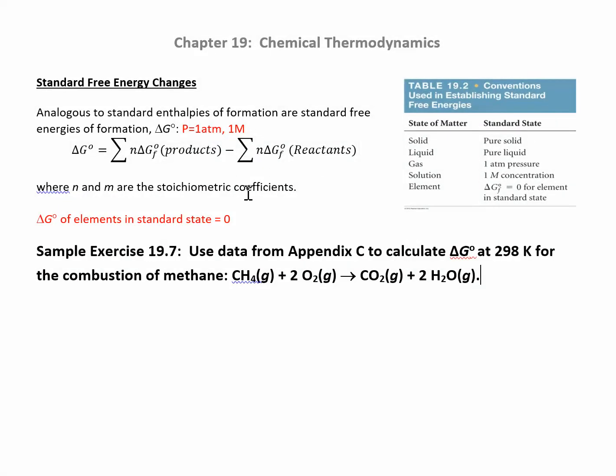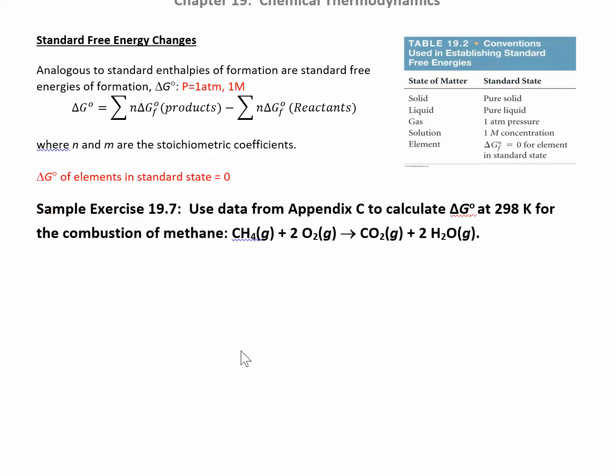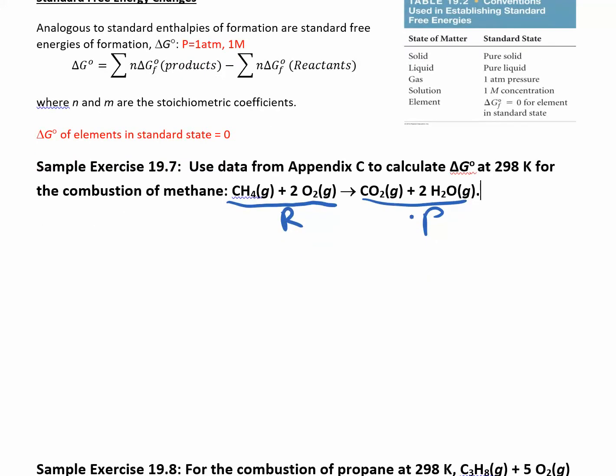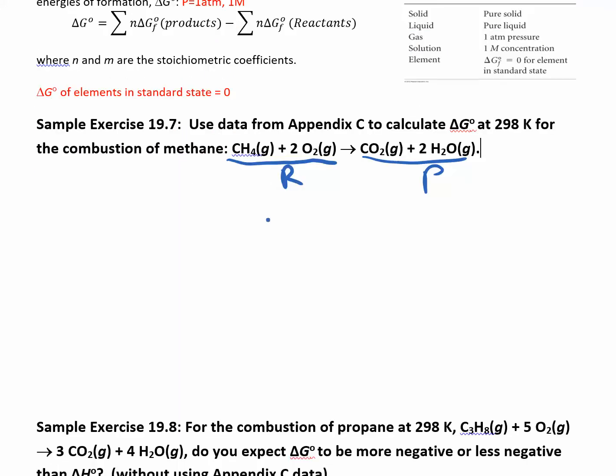If you have stoichiometric coefficients, like we have a 2 here, we have a 2 here, you want to make sure you incorporate that into this problem. That's what the N and the M are, the stoichiometric coefficients. So as long as you don't get confused with your reactants and your products, it will be fine. And again, this is just plug and chug. So these are your reactants and these are your products. And you're going to look these values up in a table and you don't have to memorize any of them. I'll always give you the table.